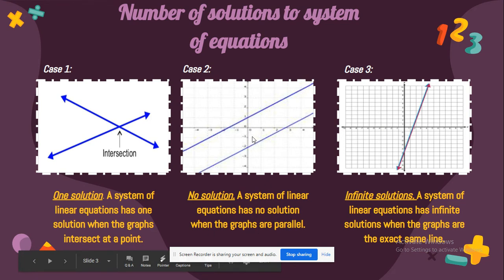Case three is called infinite solutions: a system of linear equations has infinite solutions when the graphs are the exact same line.